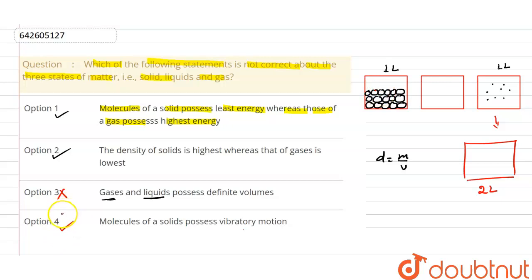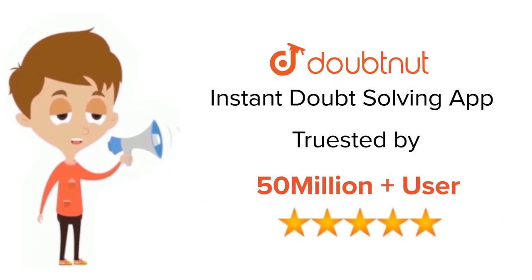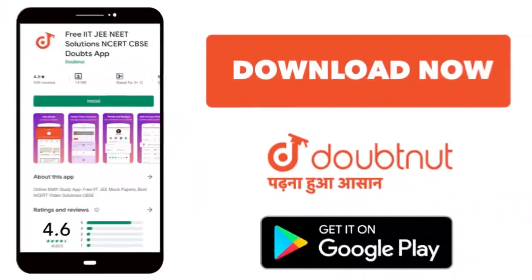is incorrect. So I hope you understand this concept. Thank you. For class 6 to 12, IIT, JEE, and NEET level, trusted by more than 5 crore students. Download Doubtnet app today.